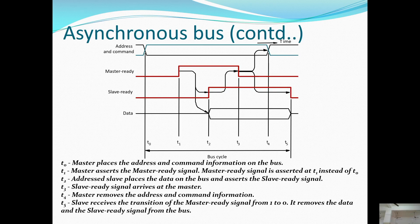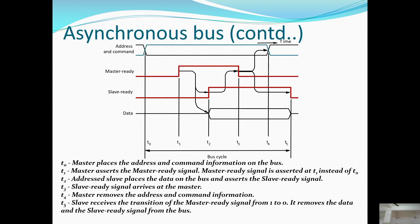In the asynchronous timing diagram, the top lines show address and command, below them master ready and slave ready, and data. At T0, the master places address and command information on the bus. At T1, the master asserts the master ready signal. At T2, the slave places data on the bus and asserts the slave ready signal. At T3, the slave ready signal arrives at the master. At T4, the master removes address and command information. At T5, on the transition of master ready from one to zero, the slave removes data and the slave ready signal from the bus.